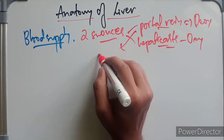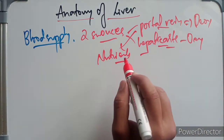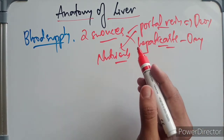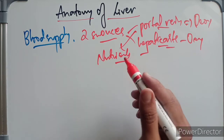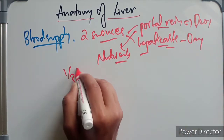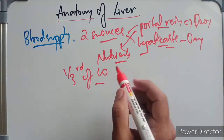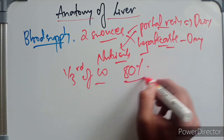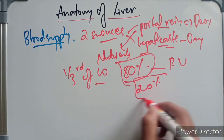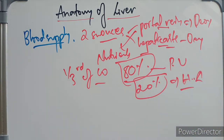The arterial, oxygenated blood is supplied by the hepatic artery, and the venous blood rich in nutrients is supplied by the portal vein. In a normal adult in the recumbent position, nearly one-third of the cardiac output passes through the liver. About 80 percent of this is delivered through the portal vein, and only 20 percent of the blood supply is from the hepatic artery.